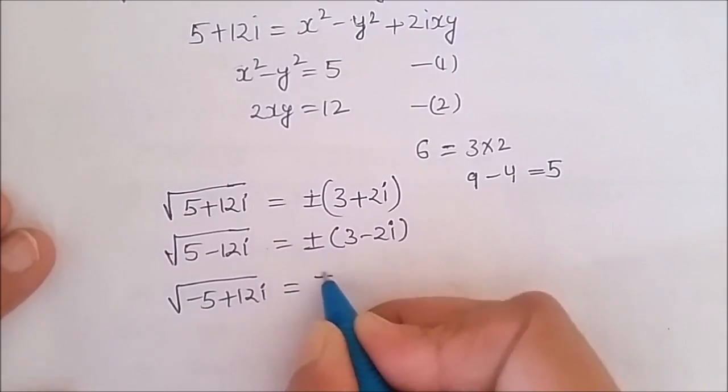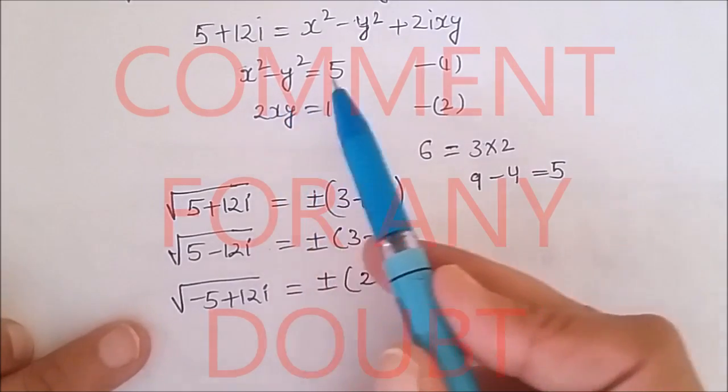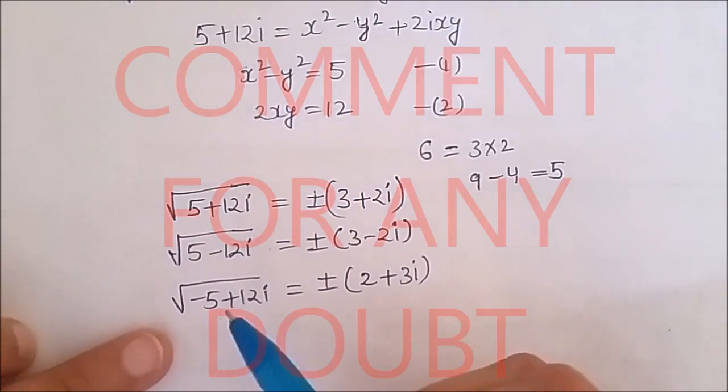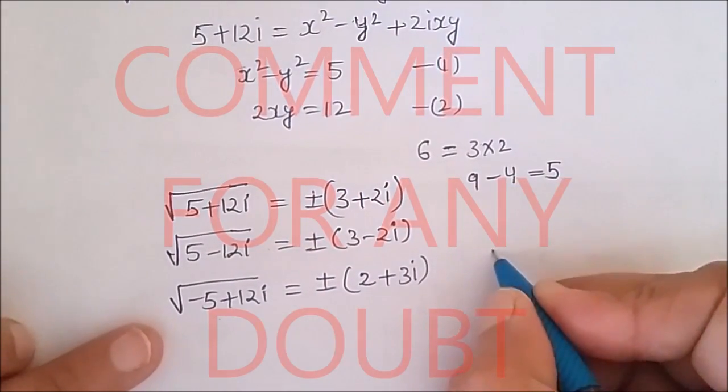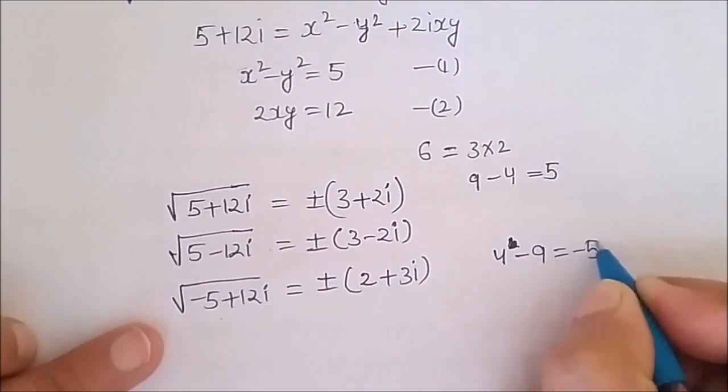Because in that case, x square minus y square will be minus 5. Minus 5 means the difference of the squares should be minus 5, that is 4 minus 9 is minus 5. That is, 2 square minus 3 square should be minus 5.